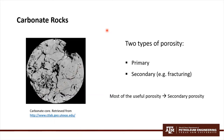Carbonates can display two types of porosity: primary and secondary. Primary is the porosity developed by the original sedimentation process by which the rock was created. Secondary porosity is created by processes other than primary cementation and compaction of the sediments, such as fracturing. Most of the useful porosity in carbonate reservoirs is secondary porosity, which is formed after deposition.